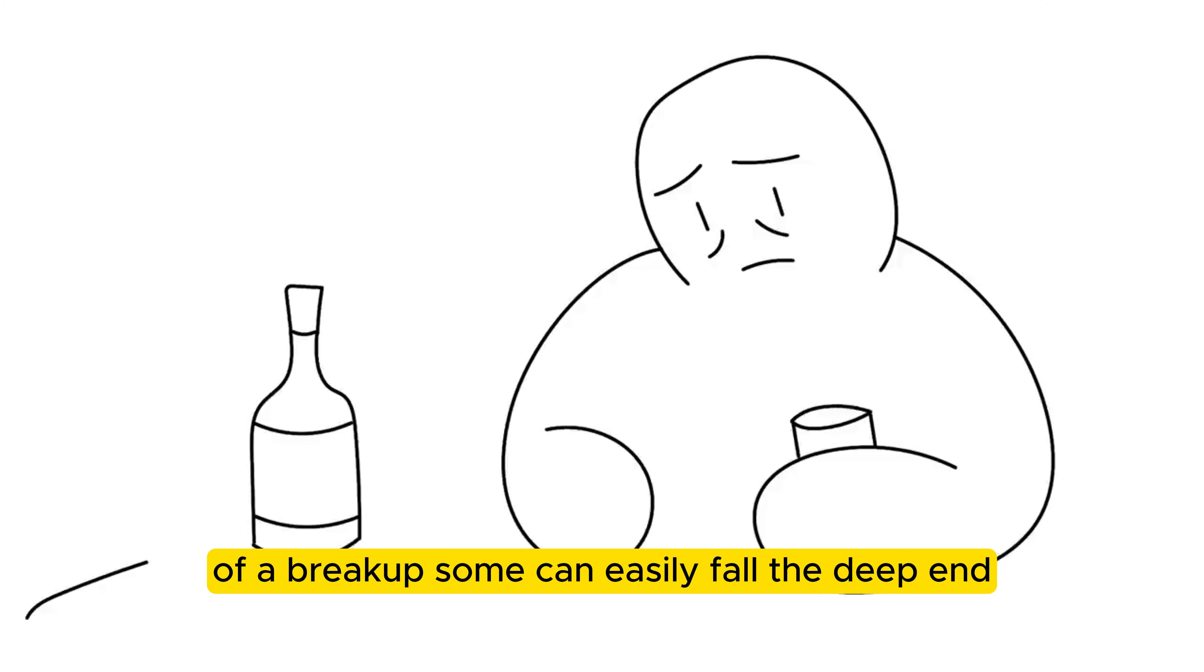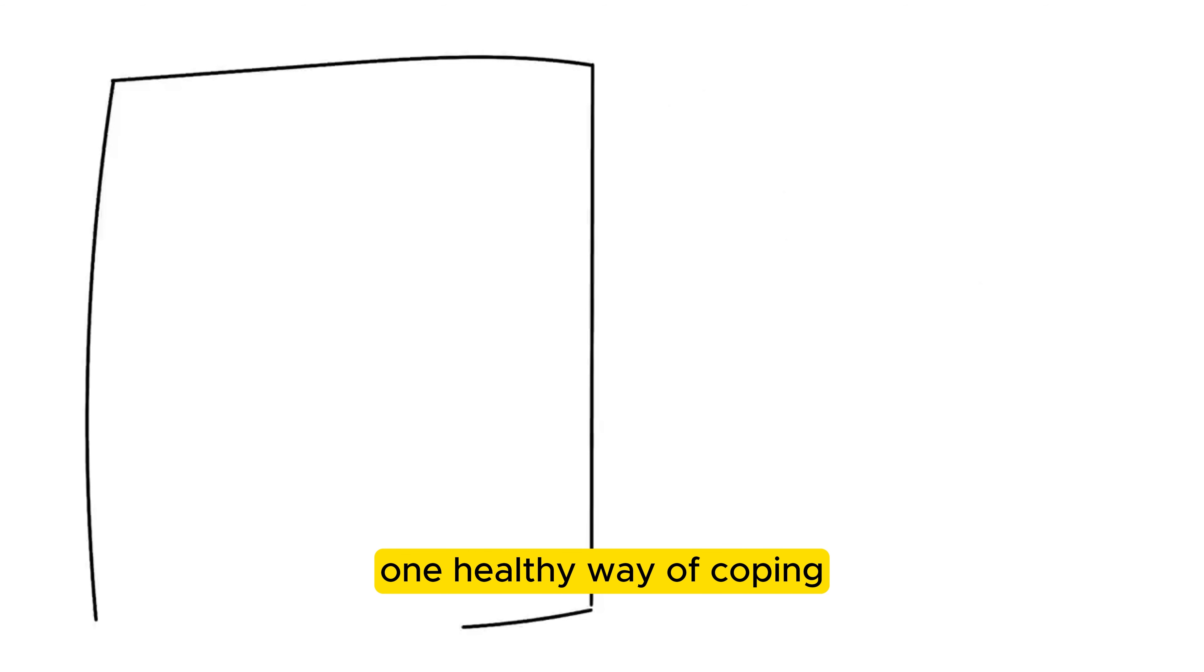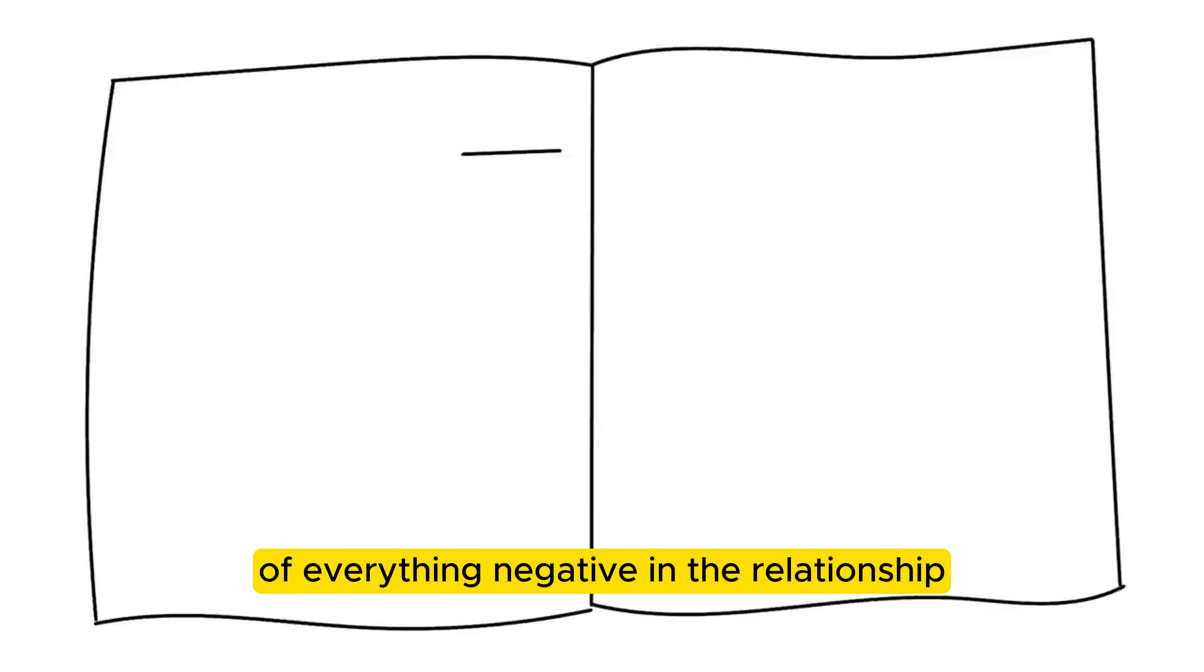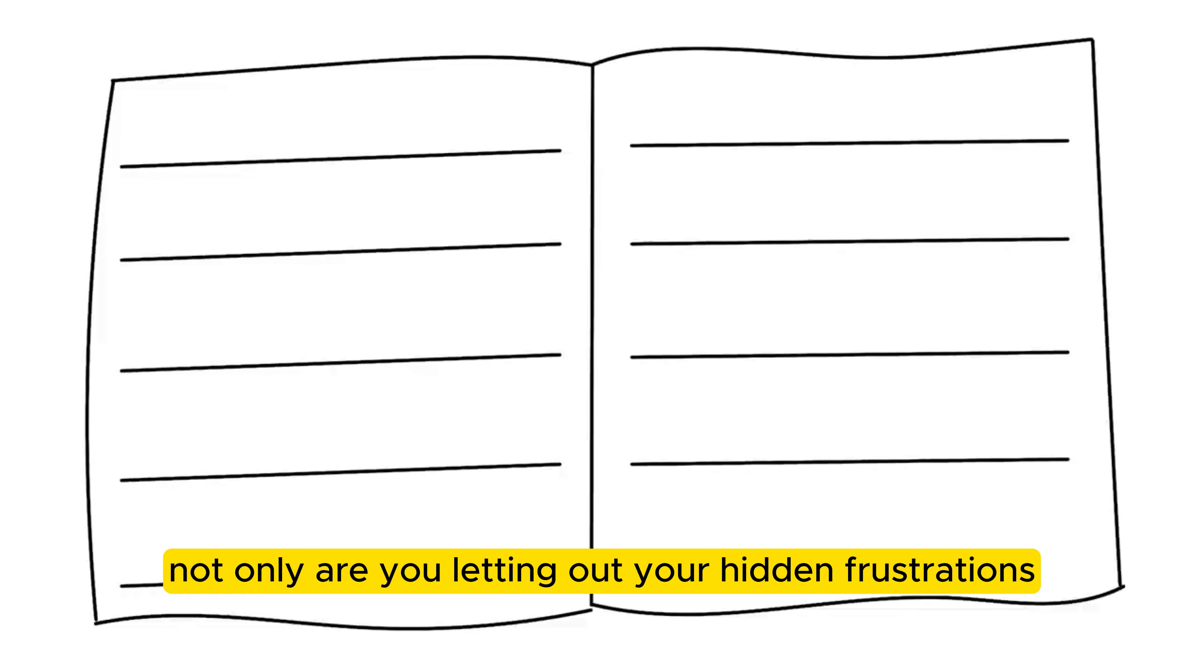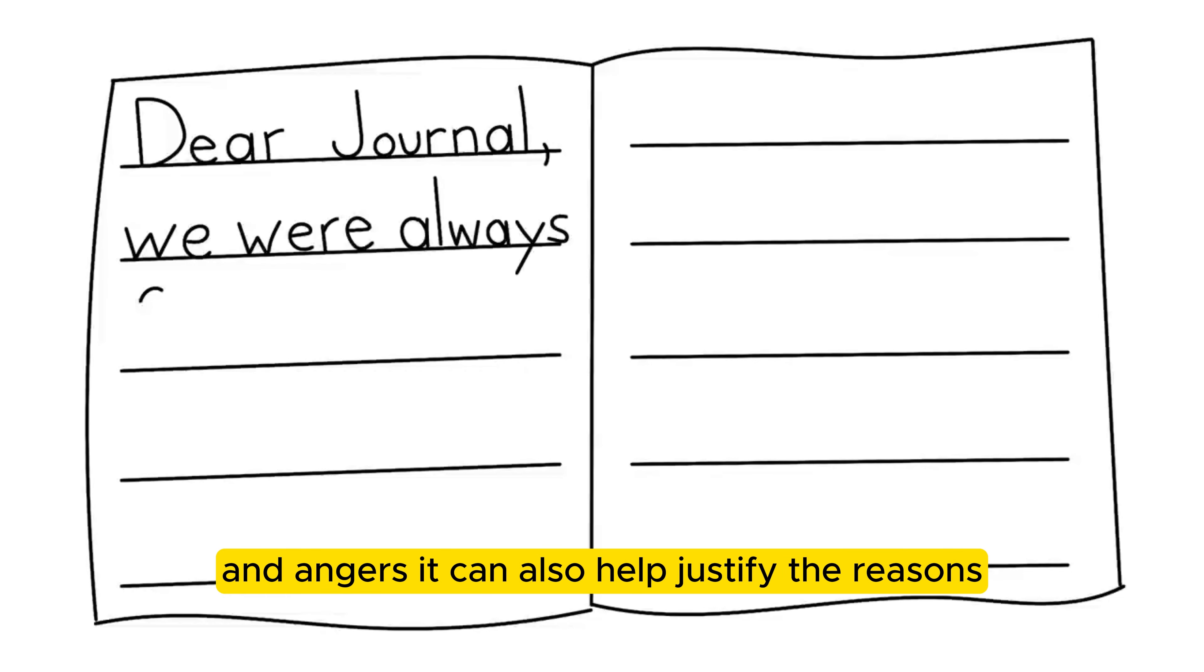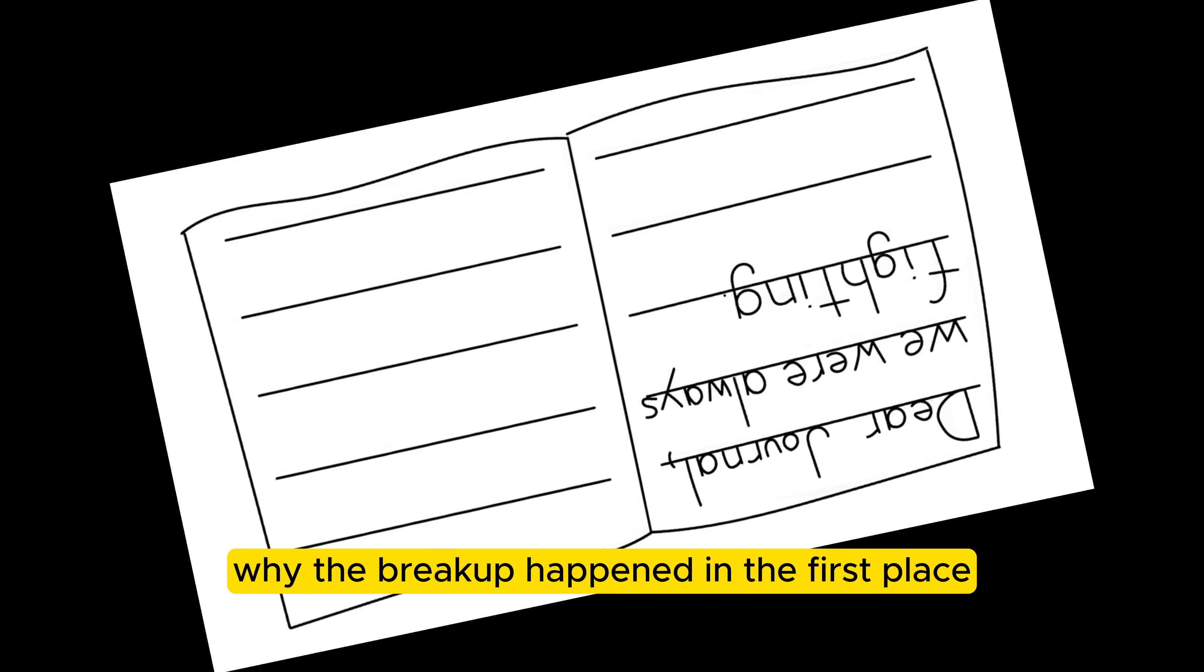Some can easily fall to the deep end and resort to alcohol and drugs. One healthy way of coping is to try and write a journal of everything negative in the relationship. This way, not only are you letting out your hidden frustrations and angers, it can also help justify the reasons why the breakup happened in the first place.